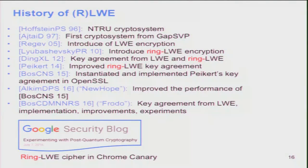A bit of history: the first lattice-based cryptosystem was introduced in 1996 with no reductions from hard lattice problems. In 1997 NTRU gave the first public encryption based on hardness of finding short vectors in lattices. In 2005 Regev introduced the LWE assumption. Five years later Lyubashevsky, Peikert, and Regev introduced Ring LWE. Ding et al. gave a key agreement protocol from both problems, Peikert improved the ring version, and Bos et al. implemented the protocol and integrated it into OpenSSL. Alkim et al. recently improved the parameters and distributions for better performance. The Frodo paper gave the first LWE-based key agreement, breaking the widely accepted presumption that only Ring LWE systems can be practical.